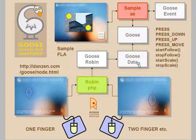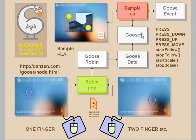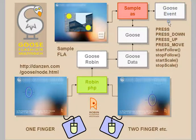Goose comes with a class called Goose Robin, which receives those signals — the X and Y positions of the mouse, and a Z value as to whether the mouse is being pressed or not — and then passes that information into Goose Data. Goose Data turns that information into an XML language called ManyML, and that then gets sent into Goose. Goose provides a series of methods such as start-follow, stop-follow, start-scale, stop-scale. And the Goose event class provides a bunch of events such as press, press-down, press-up, press-move, and more.